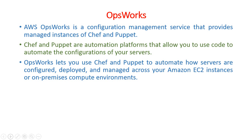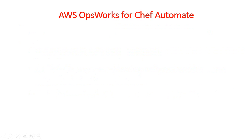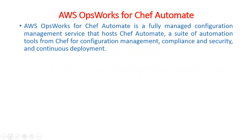OpsWorks has three offerings: AWS OpsWorks for Chef Automate, AWS OpsWorks for Puppet Enterprise, and AWS OpsWorks Stacks. These three different platforms are provided by OpsWorks with different functionality. The first platform is Chef Automate — AWS OpsWorks for Chef Automate is a fully managed configuration management service that hosts Chef Automate, an automation tool from Chef for configuration management, compliance, security, and continuous deployment.